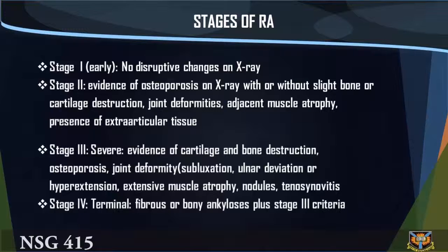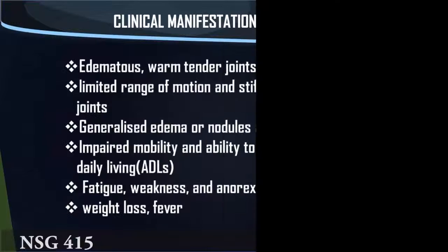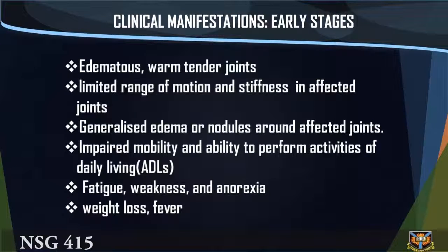Stage 4 includes terminal fibrous or bony ankylosis, plus Stage 3 criteria. Clinical manifestations — early stages: (1) edematous, warm, tender joints; (2) limited range of motion and stiffness in affected joints; (3) generalized edema or nodules around affected joints; (4) impaired mobility and ability to perform activities of daily living (ADLs); (5) fatigue, weakness, and anorexia; (6) weight loss and fever.